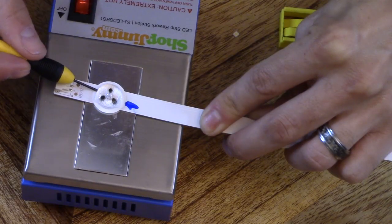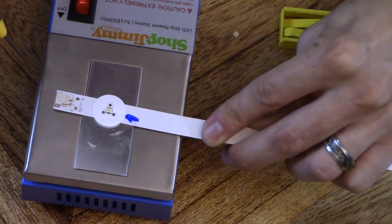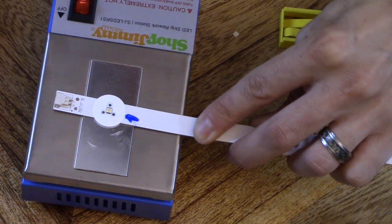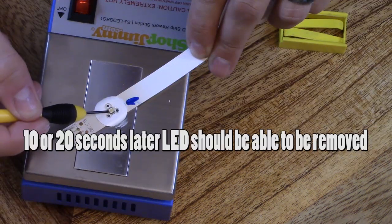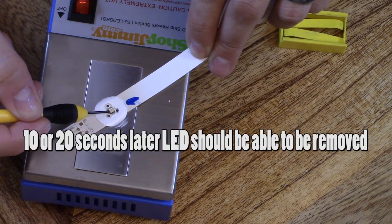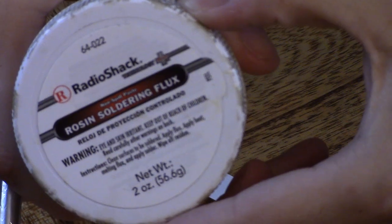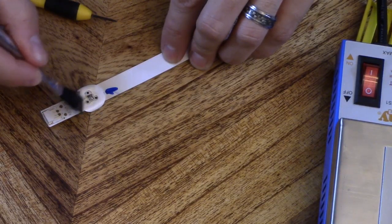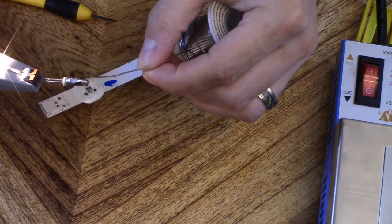Let's go ahead and remove this. There we go. Heat that up a little bit. About 10 seconds later you should be able to pull it right off. There we go. Get some flux. Clean the surface.